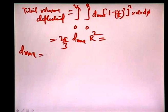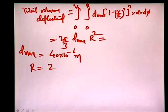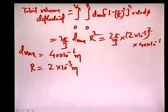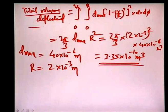Substituting the values — d_max = 40×10⁻⁶ m and R = 2×10⁻³ m (since diameter is 4 mm) — the total volume deflected is (2π/3) × (2×10⁻³)² × (40×10⁻⁶) = 3.35×10⁻¹⁰ m³.